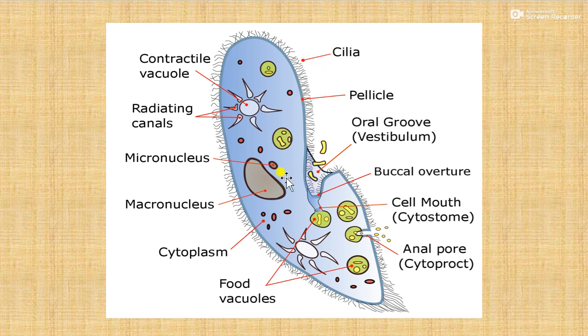Paramecium has a large nucleus called the macronucleus, without which it cannot reproduce sexually.